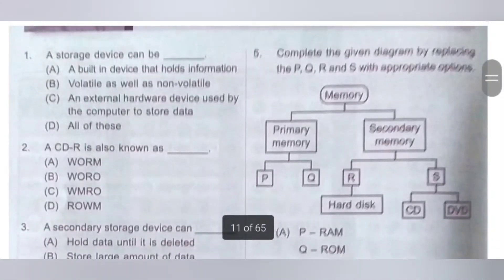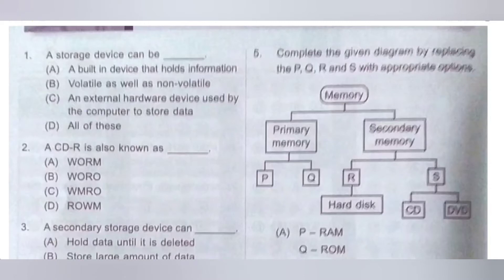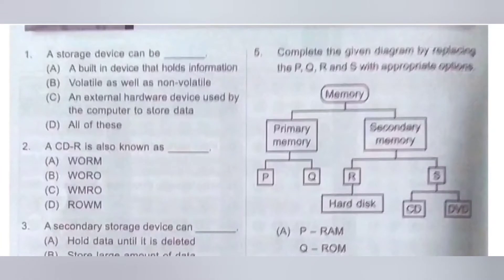First question. A storage device can be: A) a built-in device that holds information; B) volatile as well as non-volatile; C) an external hardware device used by the computer to store data; D) all of these. A storage device can be a built-in device or external hardware device, volatile as well as non-volatile. So option D, all of these, is the correct answer.